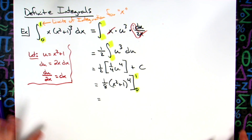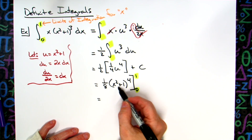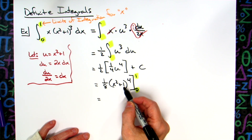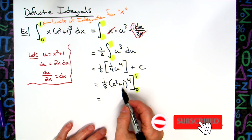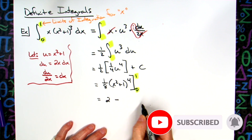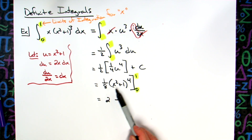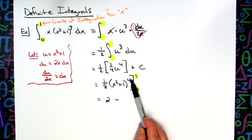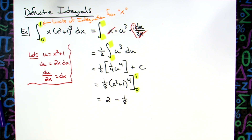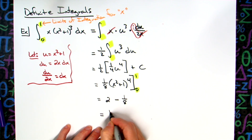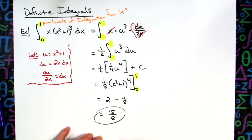Let's plug some things in. Plugging in one: one squared is one, plus one more is two. Two to the fourth — two times two is four, times two is eight, times two is 16. So 16 times one-eighth is two. Then we're going to subtract. Plugging in zero: zero squared plus one is one to the fourth, still one, times one-eighth. So one-eighth. Therefore the result is two minus one-eighth, which is 15 eighths — because that would be 16 over eight minus one over eight.